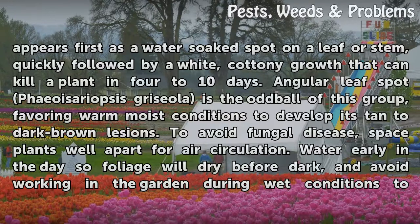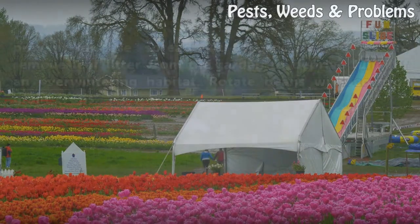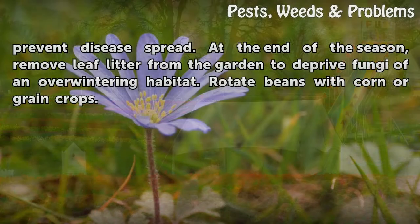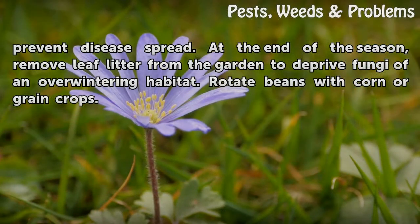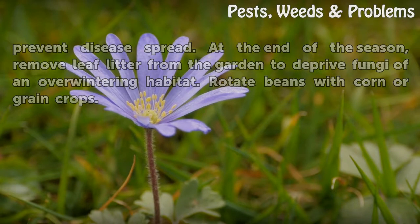To avoid fungal disease, space plants well apart for air circulation. Water early in the day so foliage will dry before dark, and avoid working in the garden during wet conditions to prevent disease spread. At the end of the season, remove leaf litter from the garden to deprive fungi of an overwintering habitat. Rotate beans with corn or grain crops.